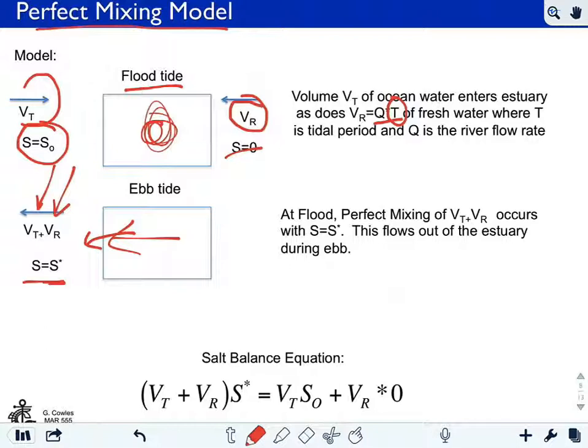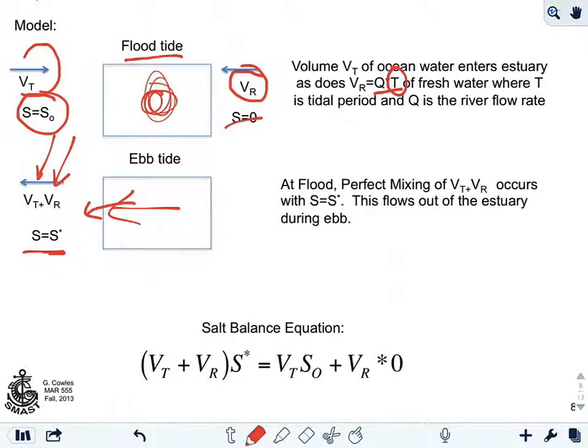So it mixes together and we have S star coming out. Now let's look at the salt balance equation. You have exported at the end of the ebb tide this quantity, VT plus VR, the amount of volume that came in during the flood plus the river discharge over the tidal cycle, times this unknown quantity S star, must be equal to the amount of salt that was introduced during the flood tide, VT S0, and no salt is introduced by the river. So this is a salt balance equation for the perfect mixing model.